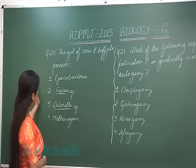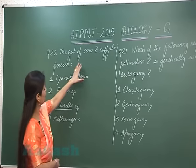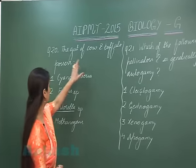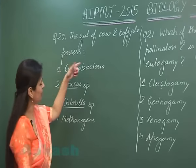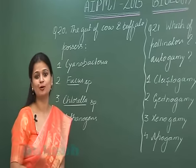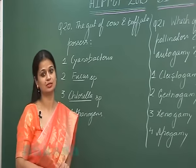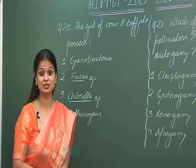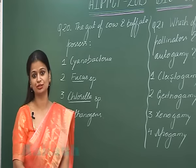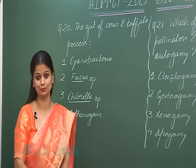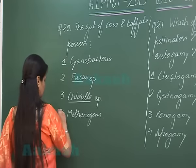Coming to question number 20: the gut of cow and buffalo possesses methanogens. Methanogens are involved in digestion of cellulose. So for this question, the right option is option number 4.